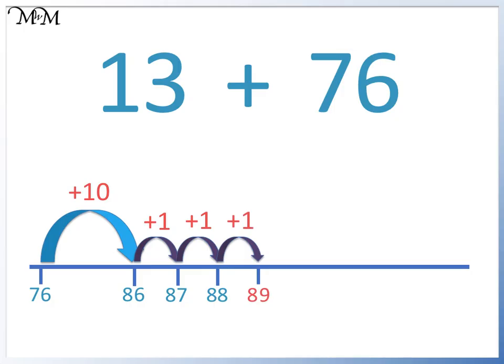13 plus 76 equals 89. We start with the larger number because making jumps of 13 is quicker and easier than making jumps of 76.